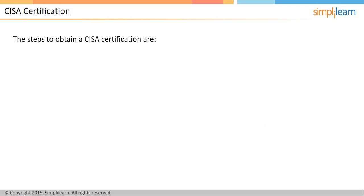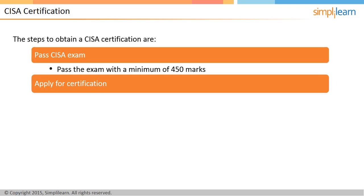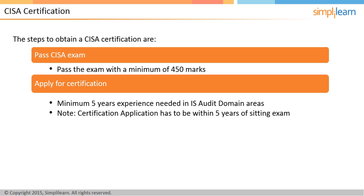For you to obtain the CISA certification, you need to pass the CISA exam with at least 450 marks out of the total 800 marks, then apply for certification. Before you apply for certification, you need to have a minimum of 5 years' experience, even though ISACA grants a number of waivers. The waivers available can be sourced from the ISACA website.